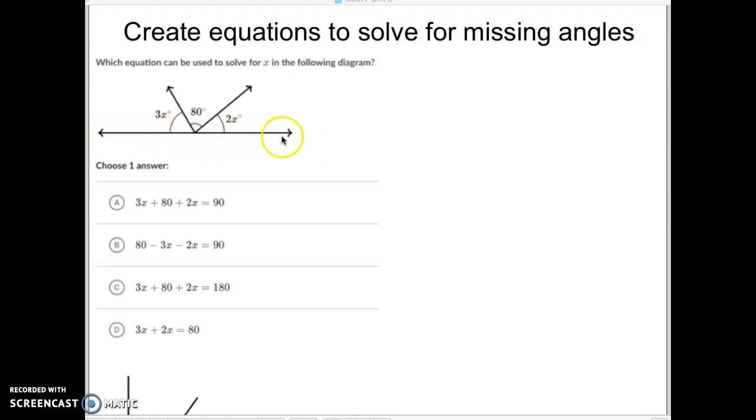This one you might notice is a straight line. Straight lines have an angle of, they're supplementary, so they have an angle of 180. So first of all, we're looking for the equation that adds up, adds this amount, this amount, and this amount to make 180.